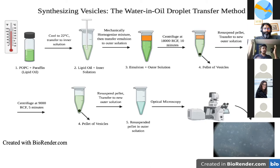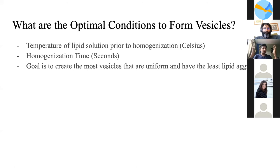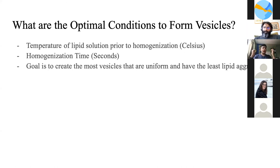We resuspend the pellet and transfer to a final sample that can be used for vesicle research, including optical microscopy to assess vesicle quality. We were curious about how to make the best quality vesicles, and we believe the two main variables are the temperature of the lipid oil prior to homogenization and the homogenization time. We noticed that when our lipid oil was warm to the touch, we got cleaner vesicles, and we decided to systematically test this.